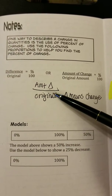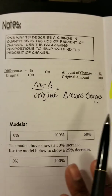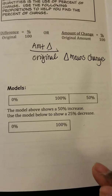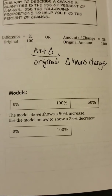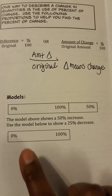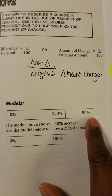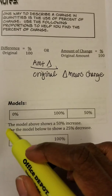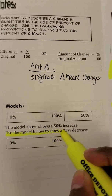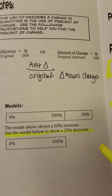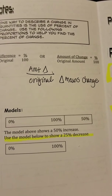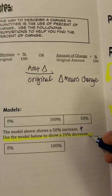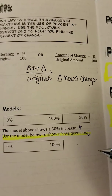Keep that proportion in mind when we work on problems. Now, another way we can figure out percent increase or percent decrease is by using models. This model here shows a 50% increase. I want you to use the model at the bottom and show a 25% decrease. We know increase means going up, but find how you would represent a percent decrease.